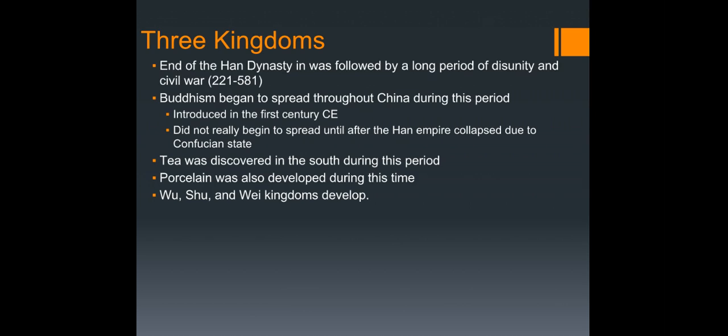Chinese scholars insisted that Buddhist texts needed to be translated. Obviously, when you have monks and nuns who are celibate, the Confucian ideal of ancestor veneration cannot be done. Buddhism was also very popular in China because it directly addressed the afterlife and offered hope. Buddhists taught a doctrine of no-self — that there was no such thing as a fixed self to be reborn.